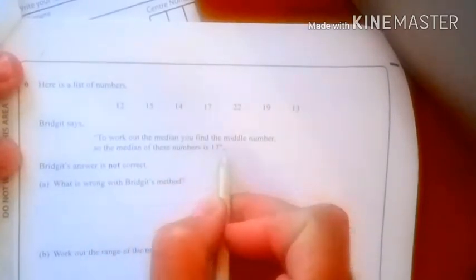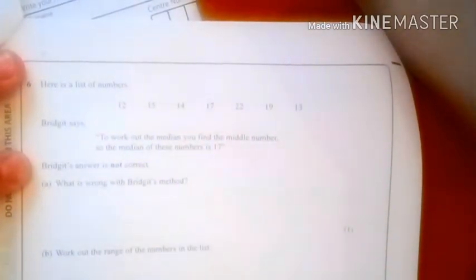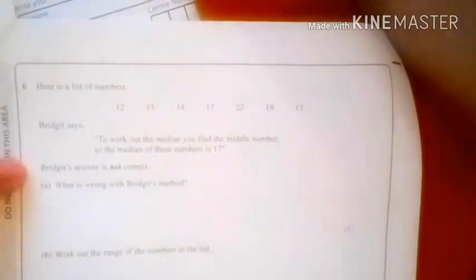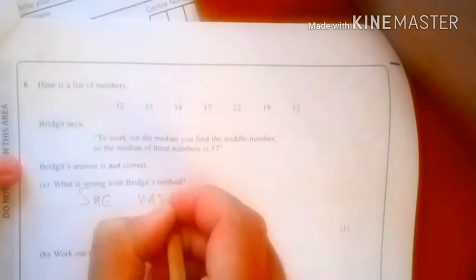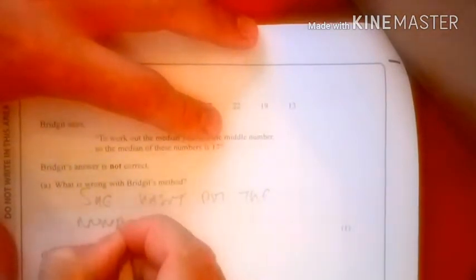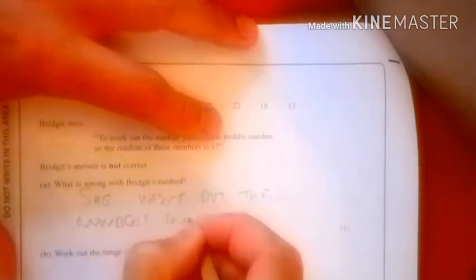Bridget says to work out the median you find the middle number, so the median is 17. Why is Bridget not correct? The answer is she hasn't put them in order. She hasn't put the numbers in order.